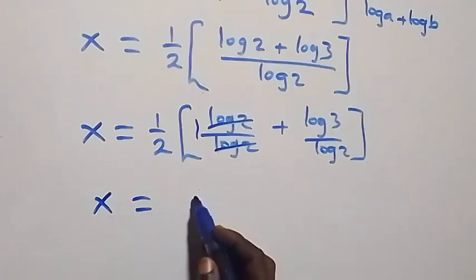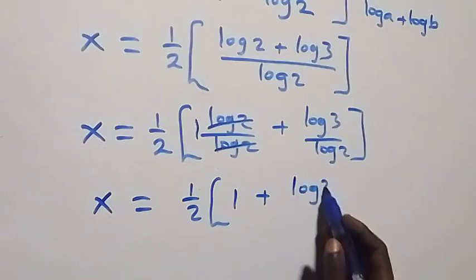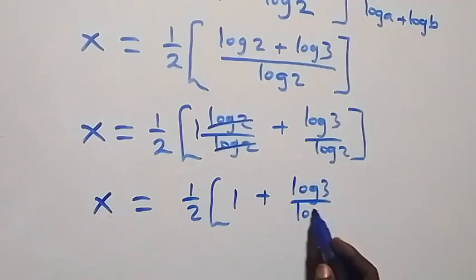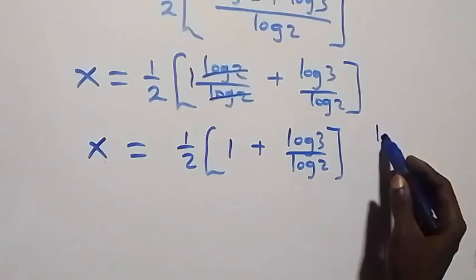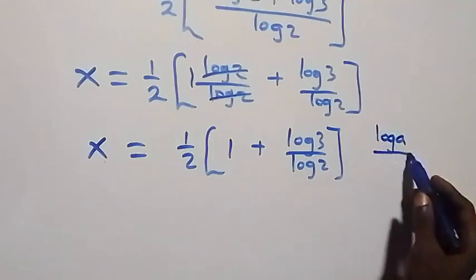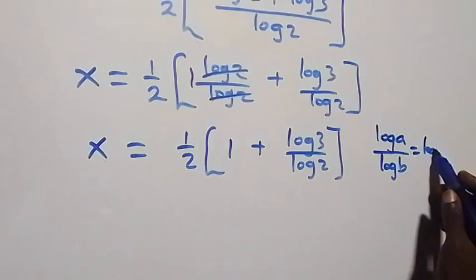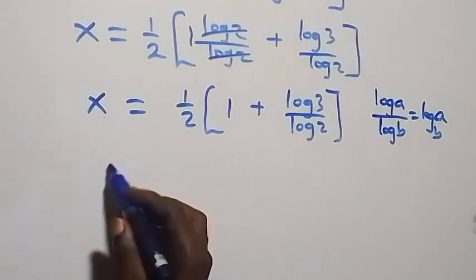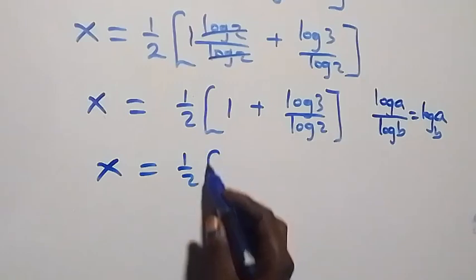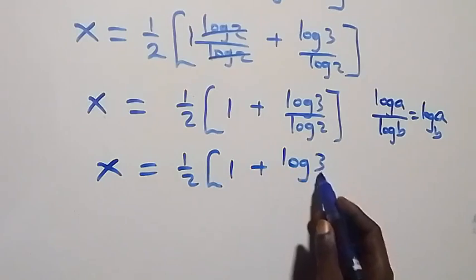Log 2 over log 2 cancels out to give 1, so we have x equals to half into bracket 1 plus log 3 over log 2. Applying the change of base rule, log a over log b can be written as log a to base b. Therefore x equals to half into bracket 1 plus log 3 to base 2.